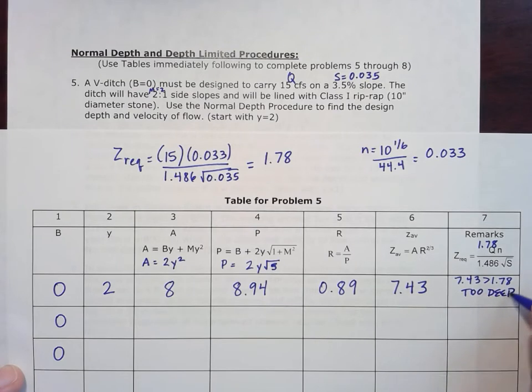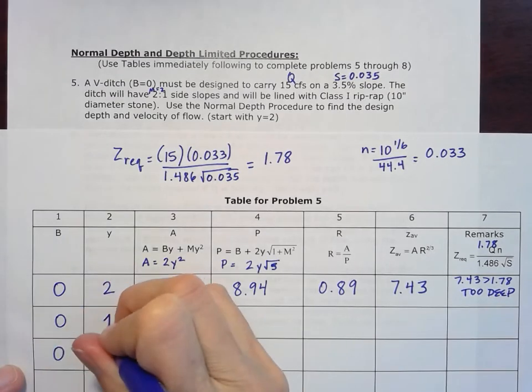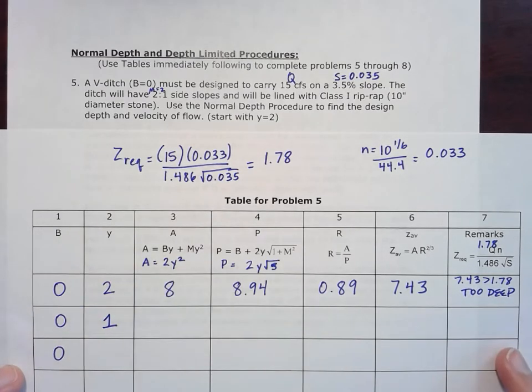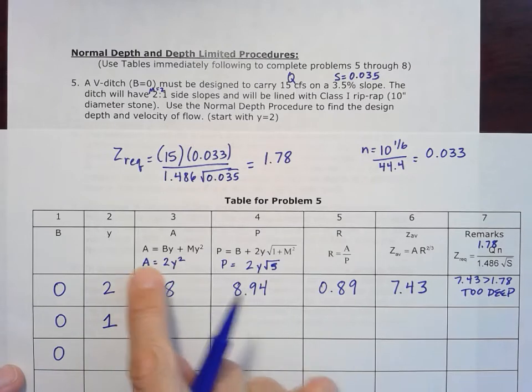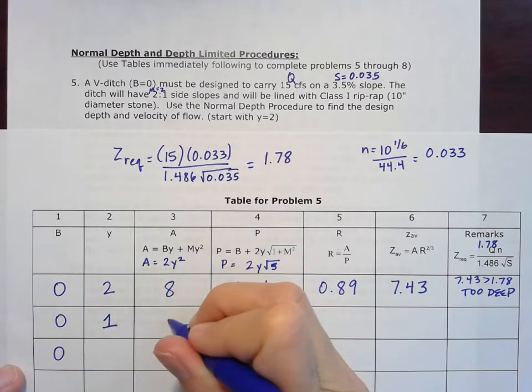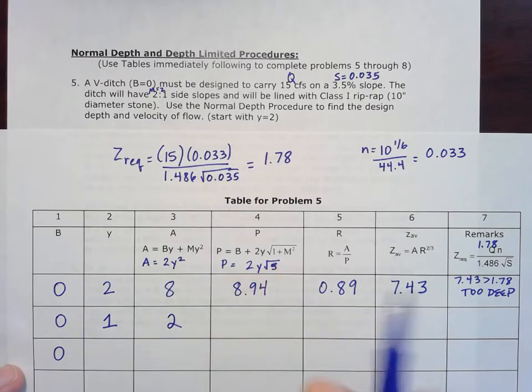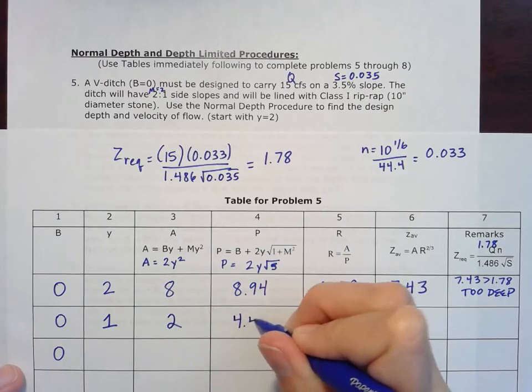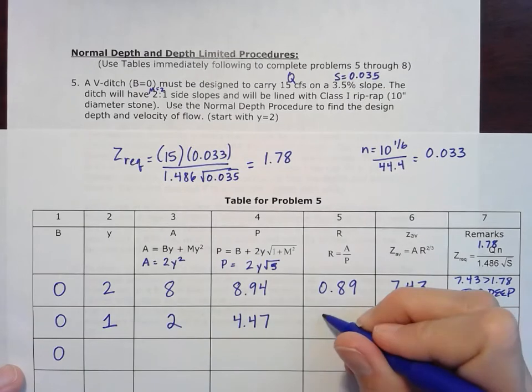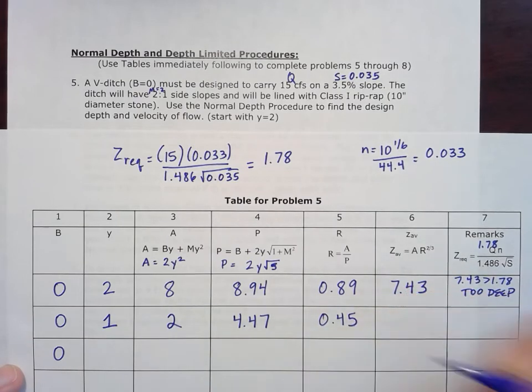We've started with too deep a depth. So we'll decrease that from 2 feet to 1 foot and iterate the procedure. Now my area becomes 2, my perimeter becomes 4.47, and my hydraulic radius becomes 0.45. And my z average 1.17. Well, now I've gone too far the other way, because 1.17 is now less than 1.78. And so now I am too shallow.